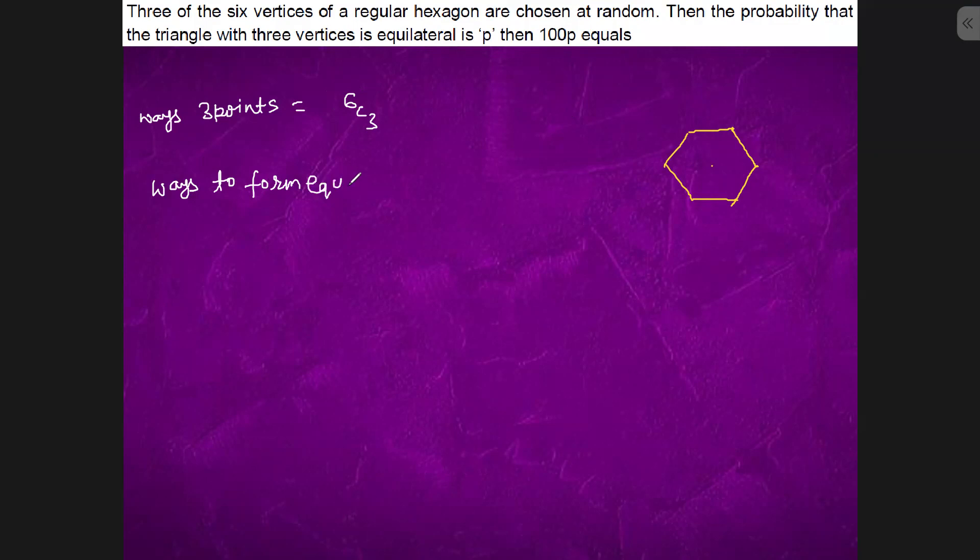equilateral triangle will be... So if we choose this point A, D, C, D, E, F. So one after one point, if we select in this way, this will form two equilateral triangles. So this is two.